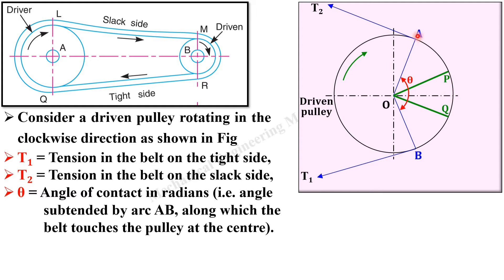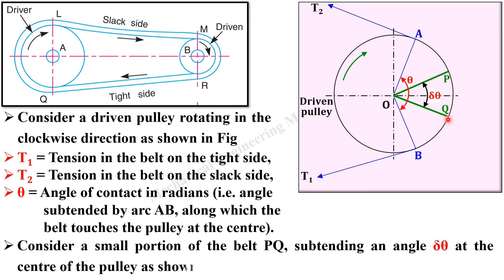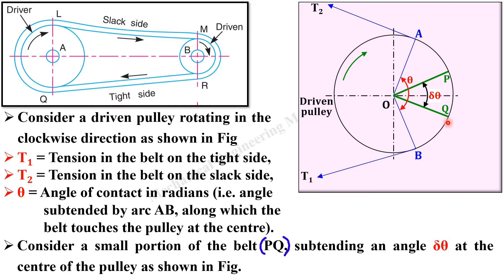Now consider a very small portion of this arc AB, say PQ. This is a very small portion of this theta angle, which is why it is called delta theta. Keep in mind delta theta has a very small value, used for analysis purposes. Consider a small portion of the belt PQ subtending an angle delta theta at the center of the pulley.